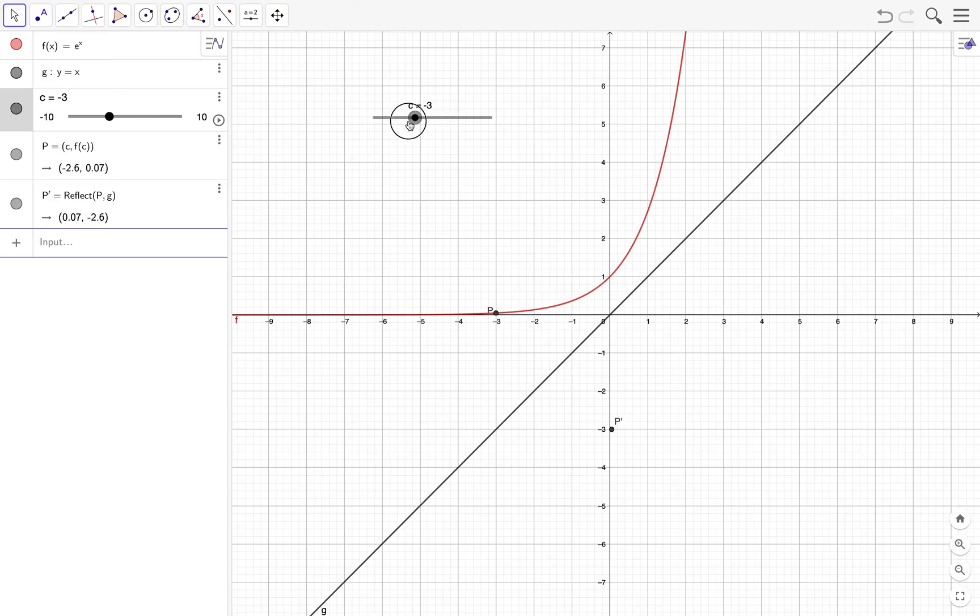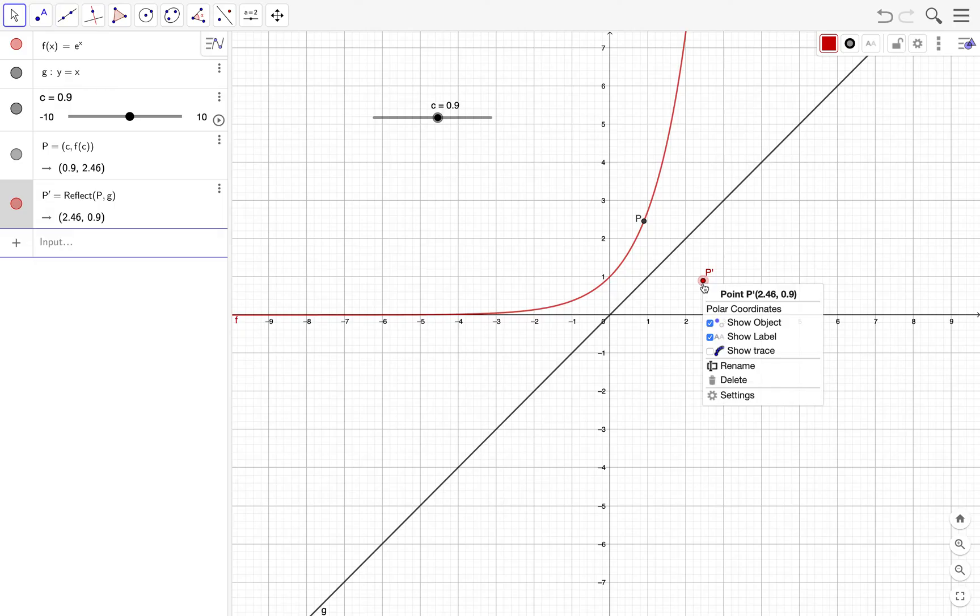Looks interesting, but I'm making it more interesting. We trace the path of P. Maybe we can change the color of P to red. To change the color, click on the style bar and then click on the color palette and then select the color you want. If you want to trace the path of P, you can just right-click and then select show trace.